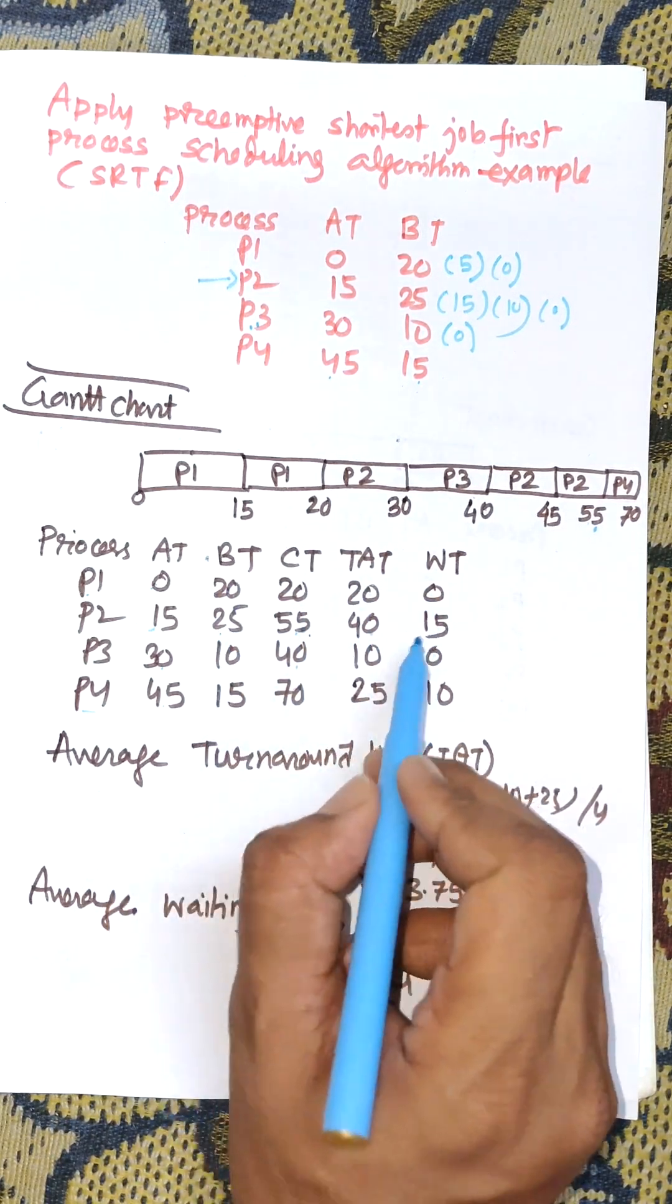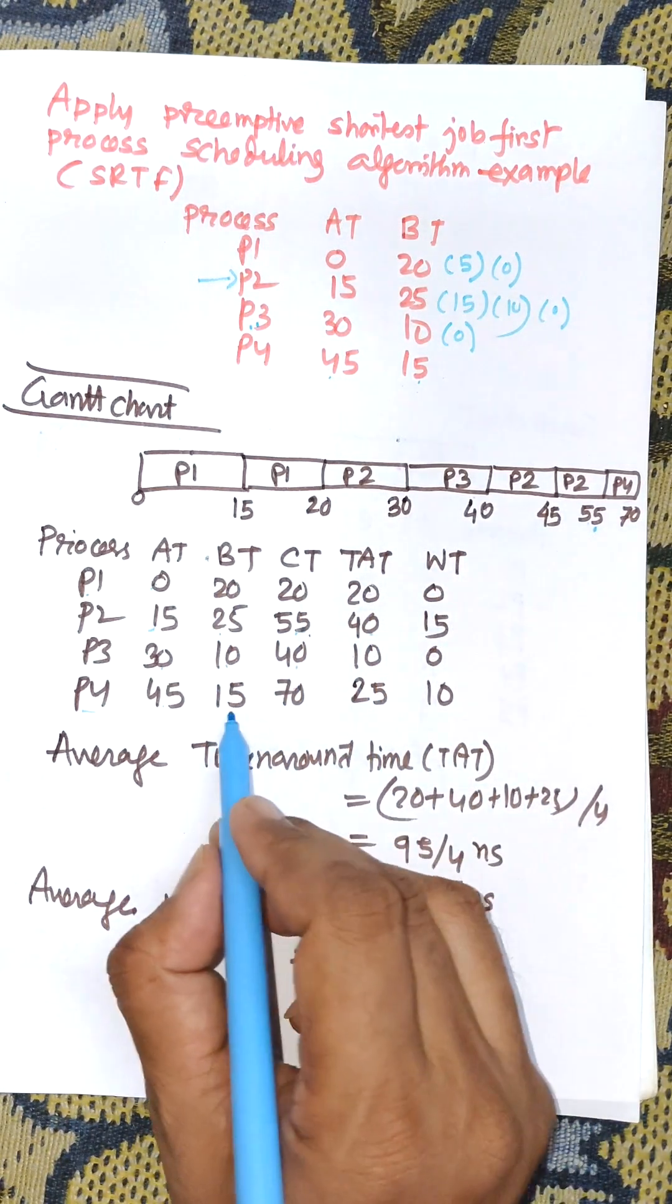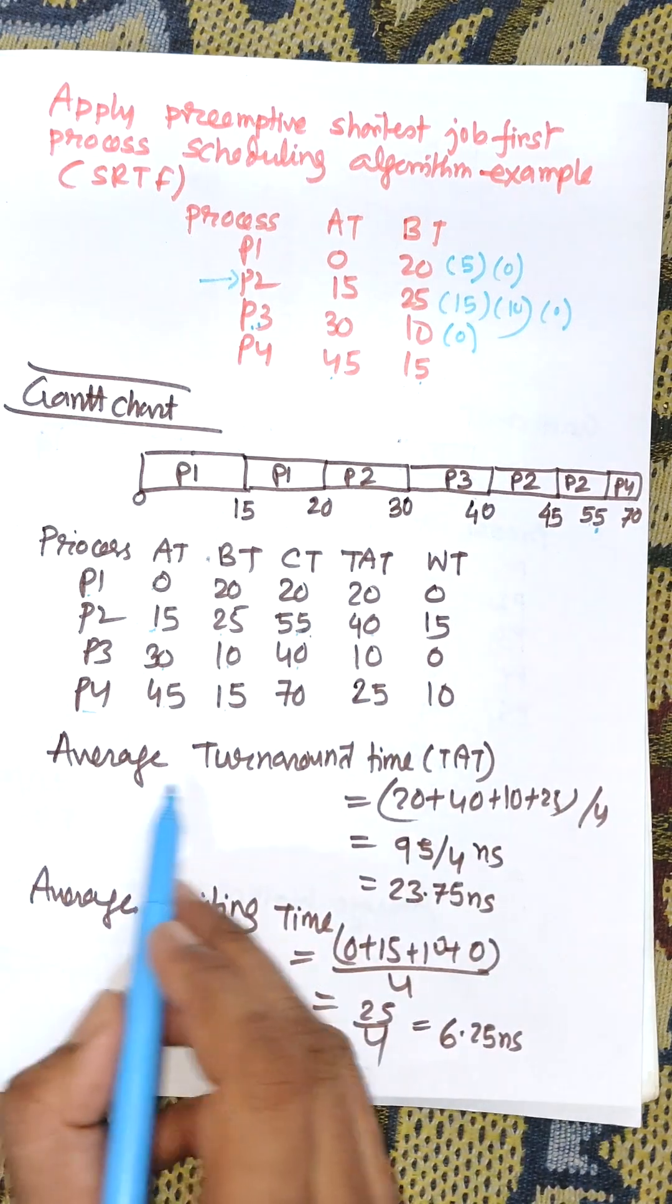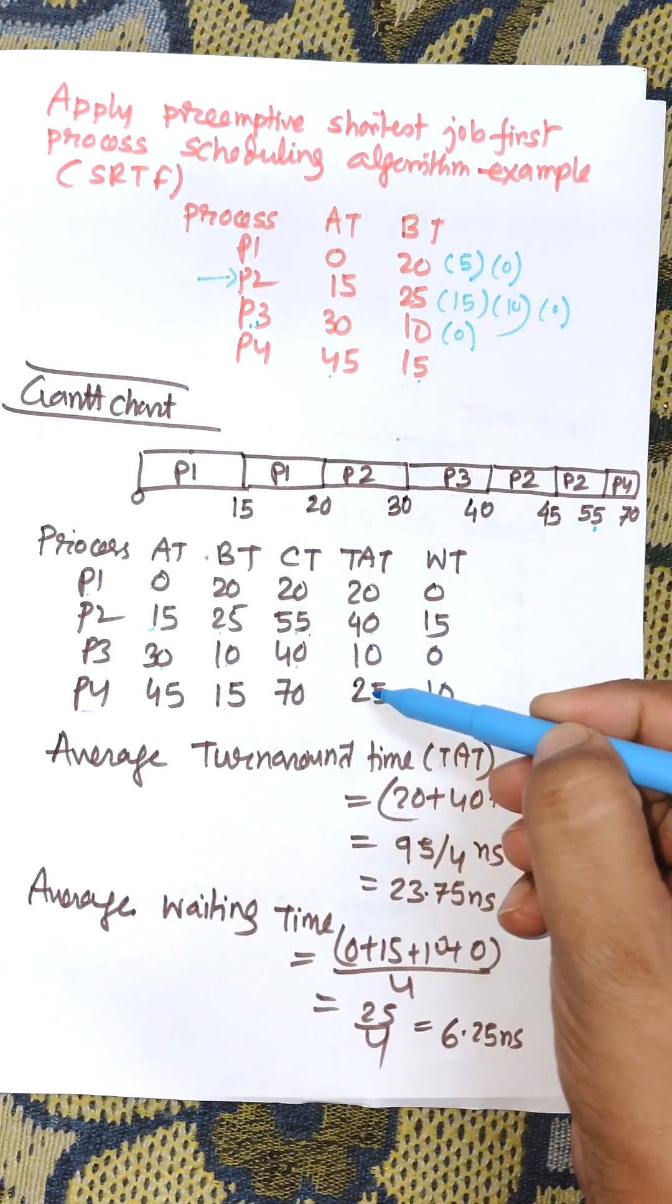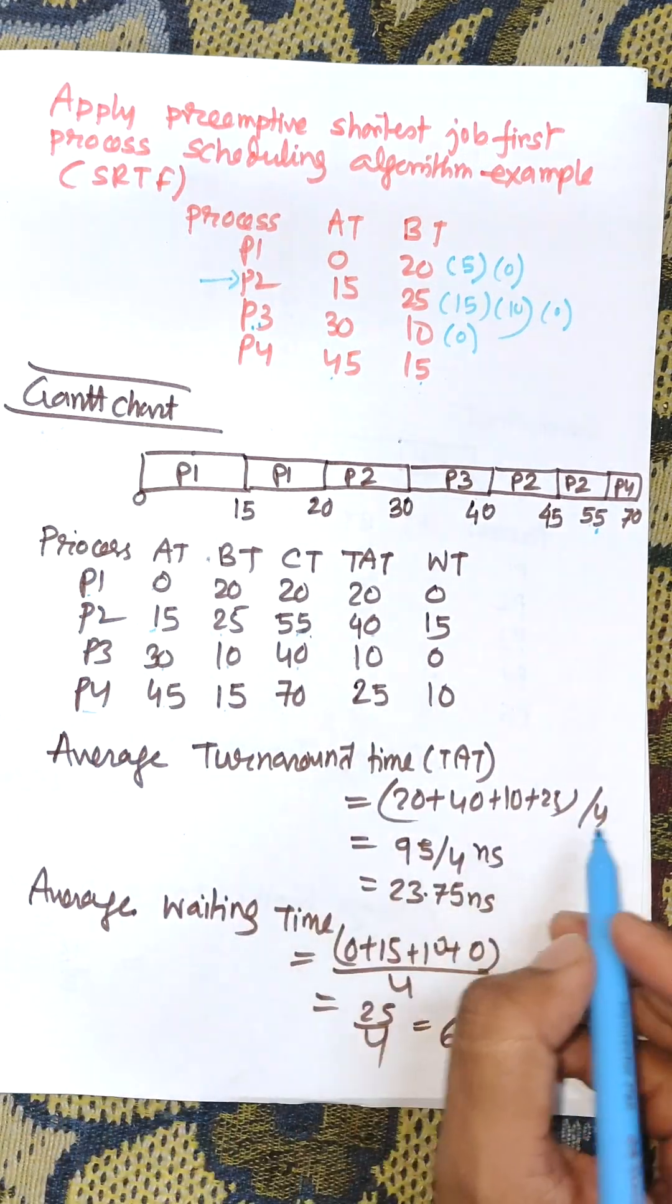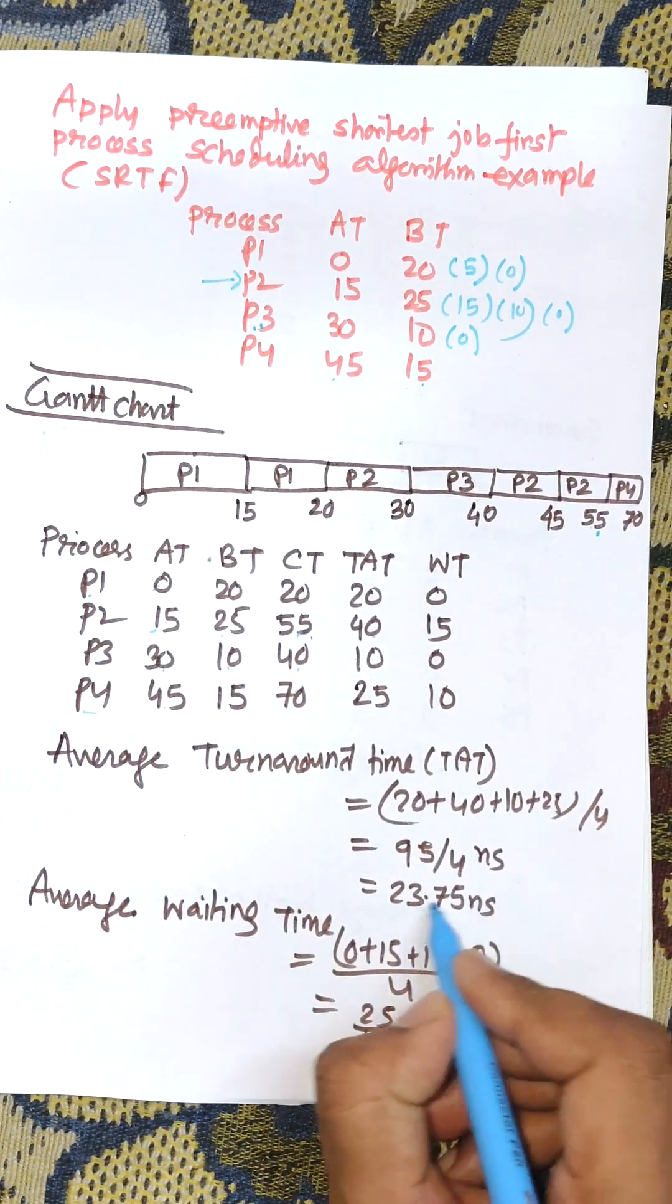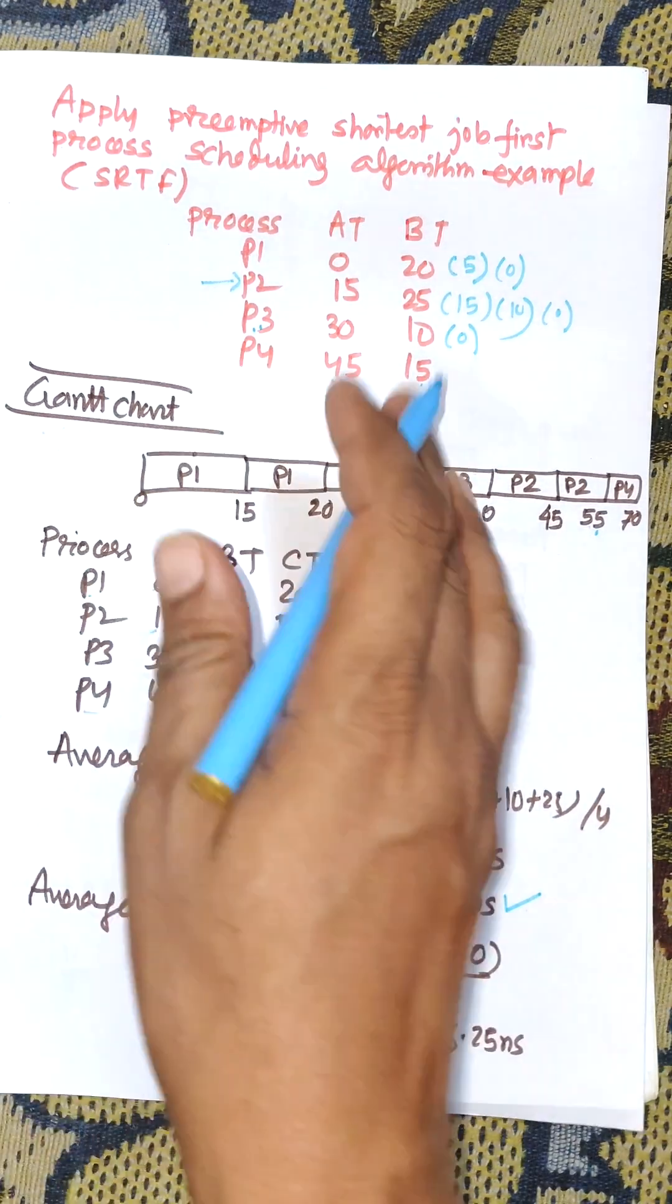For waiting times: P1 is 0, P2 is 40 minus 25 equals 15, P3 is 10 minus 10 equals 0, P4 is 25 minus 15 equals 10. Average turnaround time is 20 plus 40 plus 10 plus 25 divided by 4, which equals 23.75.